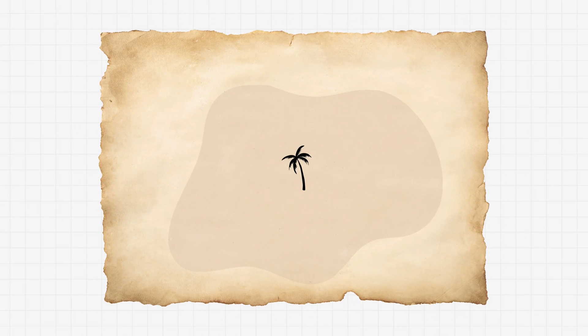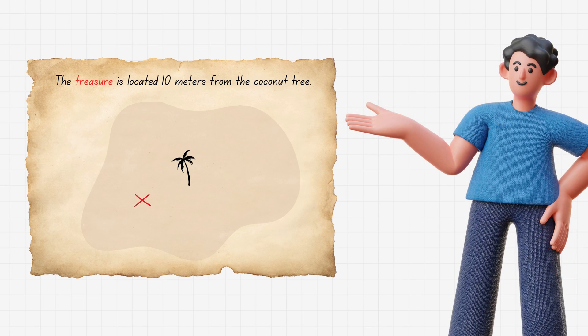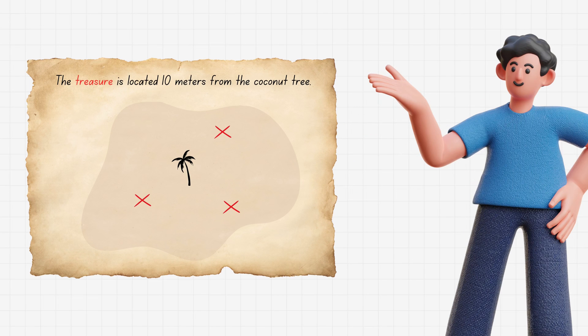Imagine you have a treasure map that says the treasure is located 10 meters from the coconut tree. But 10 meters in which direction? It could be here, here, or even here.